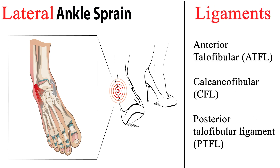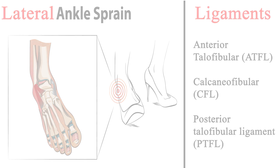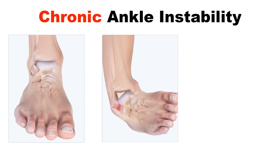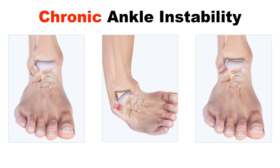This causes the lateral ligaments that support the outer ankle to become stretched and torn. After one of these sprains, the risk of having another one increases. Chronic ankle instability is when the ankle continues to roll and give way, a pesky condition that over time makes the ankle more vulnerable and damaged.